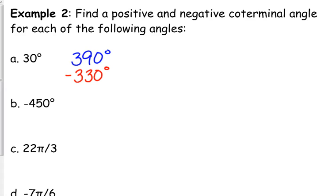If we add 360 to negative 450, we get negative 90. It's still negative, so that means we need to add 360 again to get the positive angle. Negative 450 degrees is more than one rotation in the negative direction. So when we add 360, it's still going to be negative. Then we've got to add 360 again to get the positive. Technically, you could subtract 360 to get another negative co-terminal angle, so negative 810 is also a negative co-terminal angle.